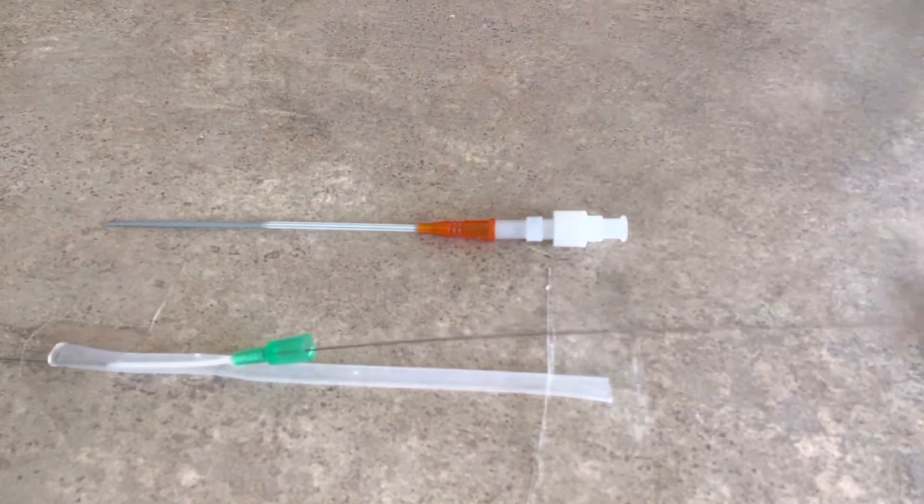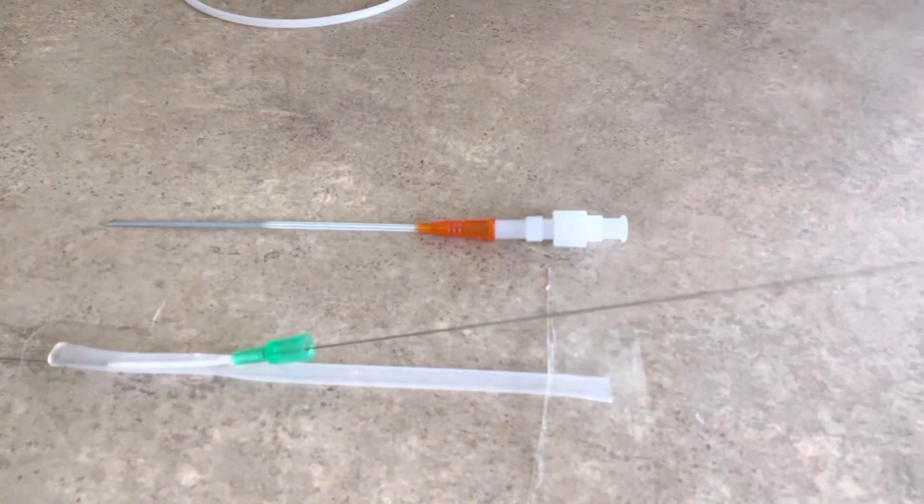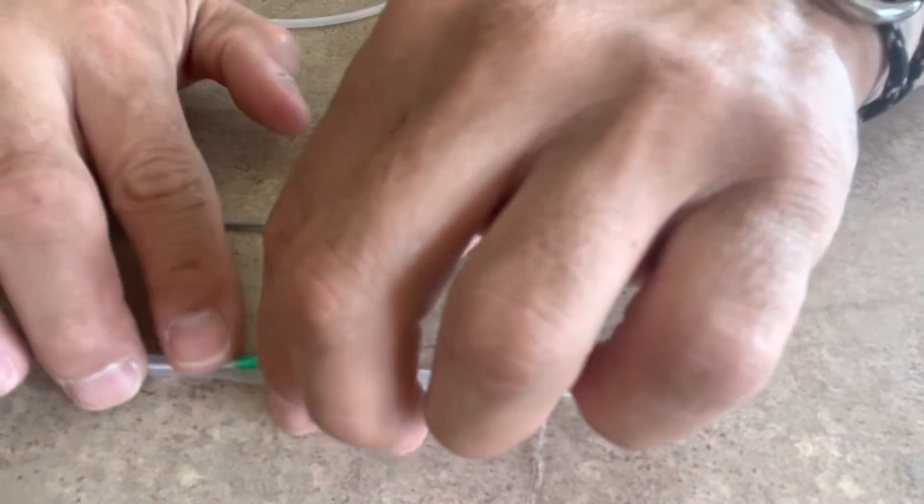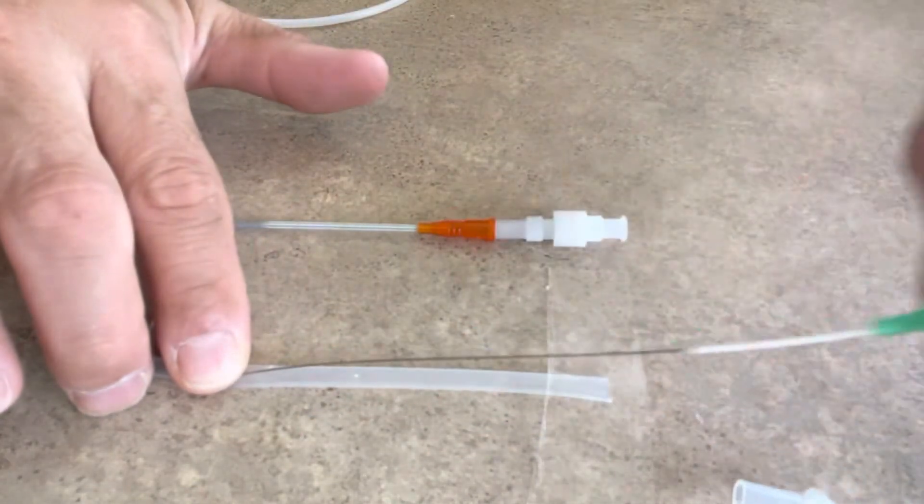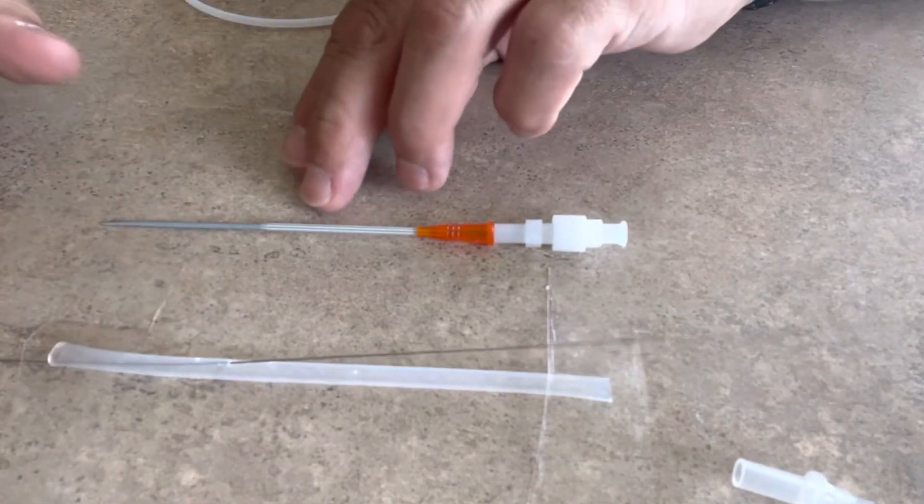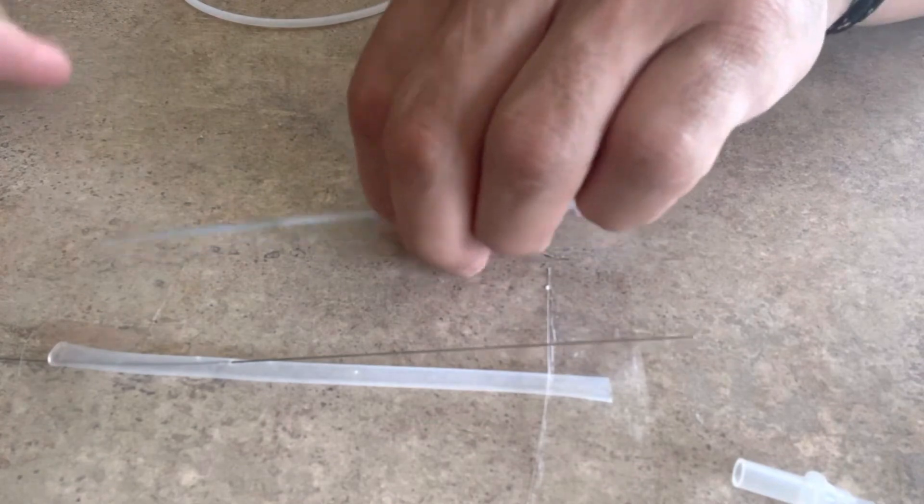Make sure you've got a decent amount of length in there, and then we're going to go from there. And just like any Seldinger technique, what you basically do is you take the angiocatheter off. And what I'm going to do, I'm going to pull this wire up a little bit and just show you.